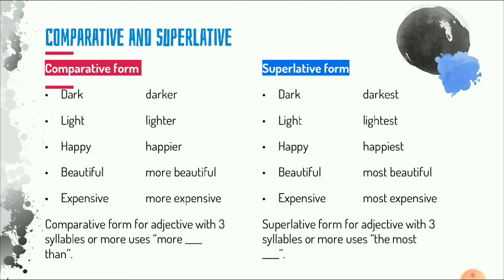For superlative adjectives: 'dark' becomes 'darkest,' 'light' becomes 'lightest,' 'happy' becomes 'happiest.' For adjectives with three syllables or more, like 'beautiful' and 'expensive,' we use 'the most' — 'the most beautiful' and 'the most expensive.' For example in a sentence: 'Lily is the most beautiful girl in the class.' Here, 'the most beautiful' is the adjective and 'girl' is the noun it describes.